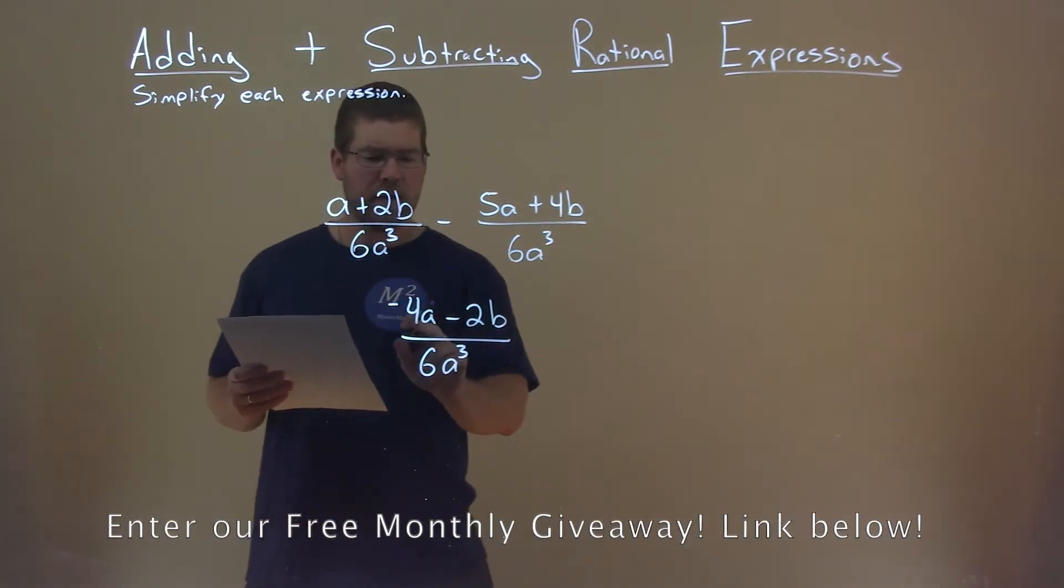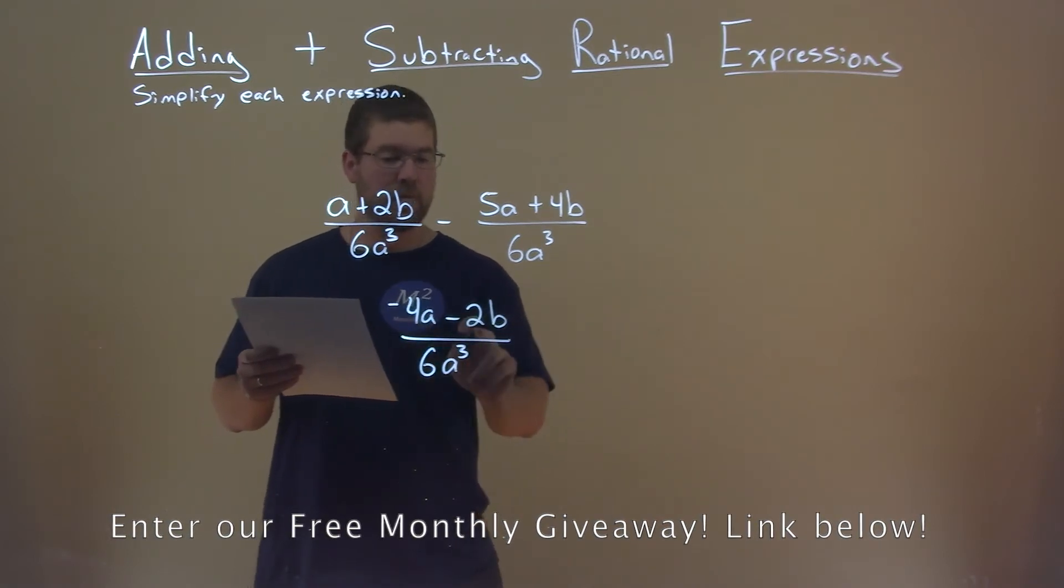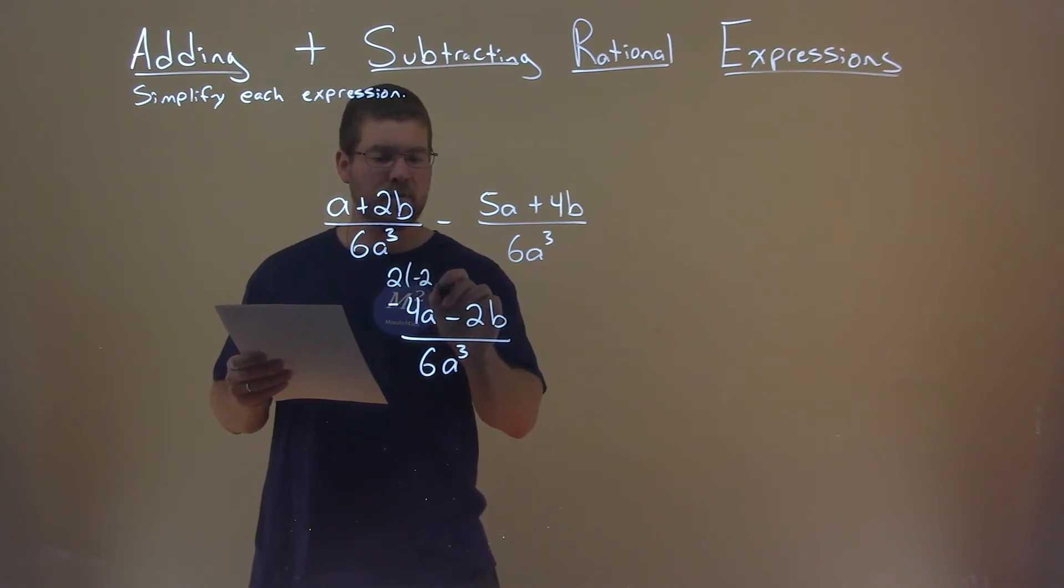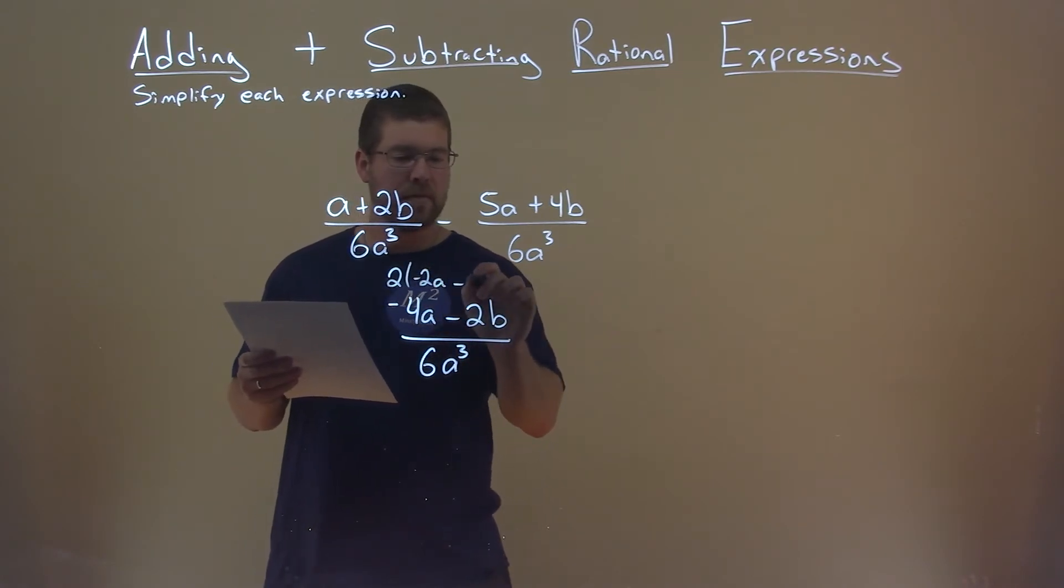Can't we pull out a negative 2, or positive 2 from both parts up here? Right? If we pull out a positive 2, I'm left with negative 2a minus b.